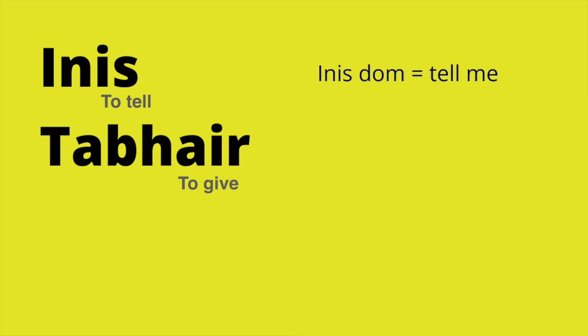Two verbs you'll often find associated with 'do' are 'inis' and 'tabhair'. 'Inis' means 'to tell' and 'tabhair' means 'to give'. So 'inis dom' means 'tell me' — literally 'tell to me'. 'Tabhair dom' means 'give me' or 'give to me'. 'Do' very often is associated with these two verbs as they are very compatible. Let's see how by looking at some sample sentences.